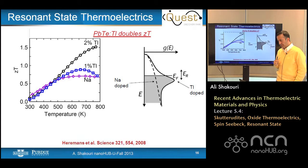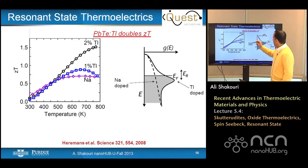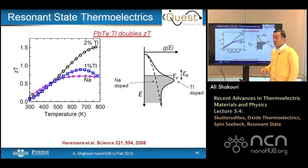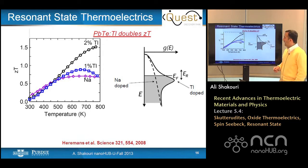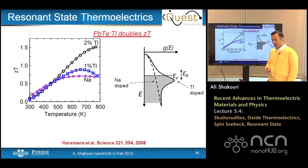A paper by Jos Heremans in Science in 2008 showed that adding thallium to lead telluride forms a resonant state — a bell-shaped feature in the density of states — improving ZT from about 0.8 to about 1.5. This resonant state approach has been applied to other material systems. Questions remain about whether resonant states or multiple bands give better performance; it heavily depends on engineering the Fermi energy to the right position. Any sharp features in the density of states are definitely beneficial.